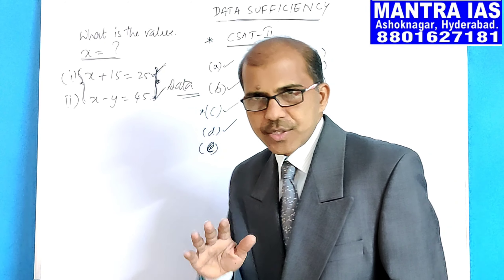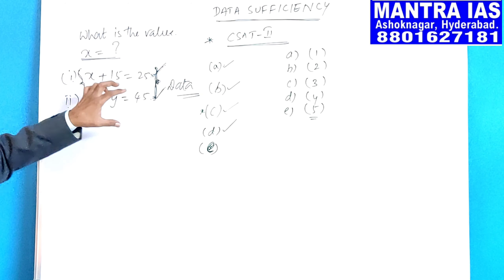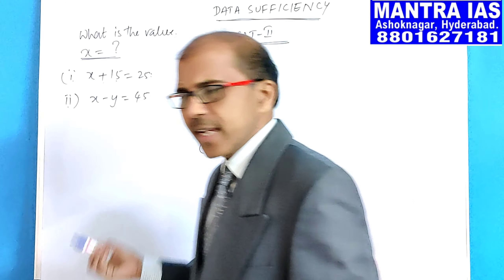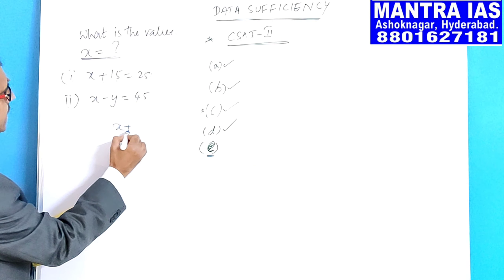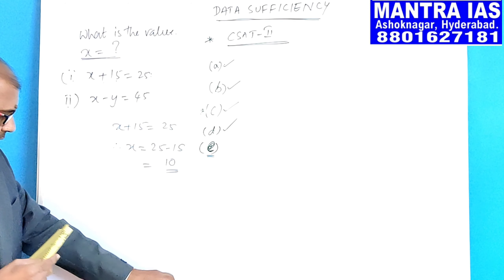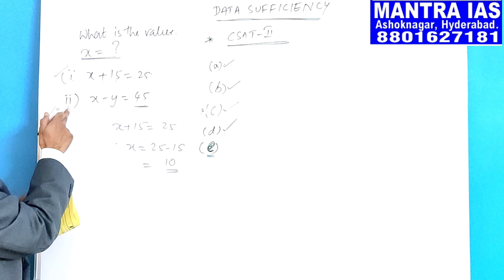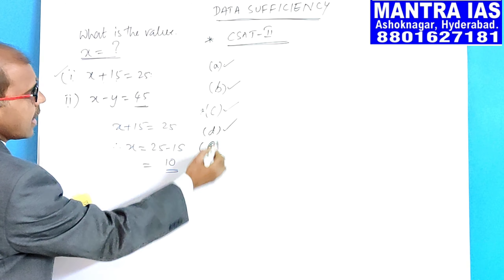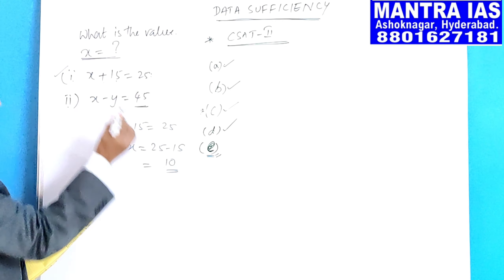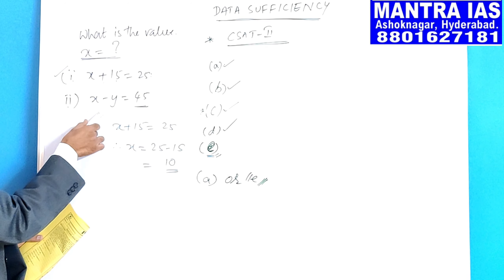Now I am repeating the first question: what is the value of X? First statement: X plus 15 is equal to 25. Second statement: X minus Y is equal to 45. From the first statement, X plus 15 = 25 gives X = 10. We get the answer directly. Now we must also check the second statement to see if the answer qualifies as E.